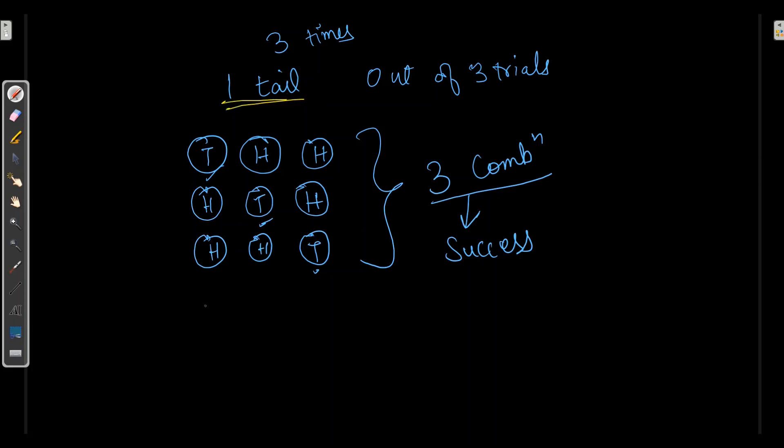So here we will have combination for N number of trials and X number of success equal to NCX. This we have read in permutation and combinations where we can also write it as N choose X. If we open this up, we will get N factorial upon X factorial times N minus X factorial. Where N refers to number of trials and X are number of success.